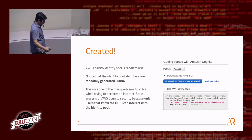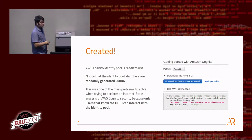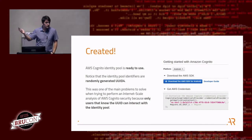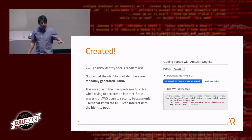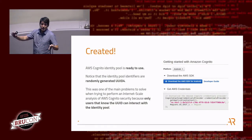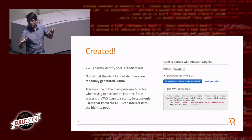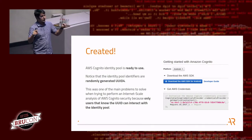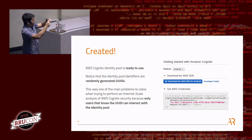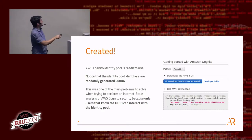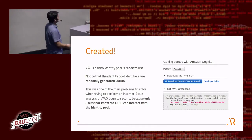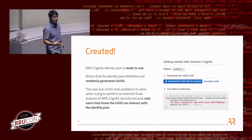After the developer completes those simple steps, the identity pool is created and ready to use. The developer also gets a screen with the identity pool ID that needs to be hard-coded into the mobile application and into the web application — it's the entry point for Cognito. Those applications need the ID to know which Cognito instance they're talking with. As a reminder, this is completely random — it's not possible to predict those IDs — and it's long, so brute forcing the IDs is not possible.